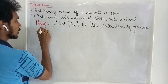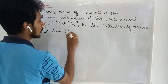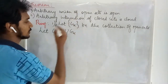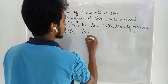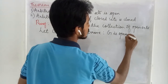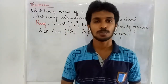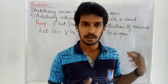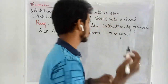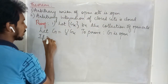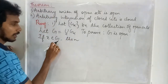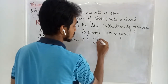Let us take G to denote the union of these sets. We have to prove that G is open. In order to say something is open, we have to prove all the elements of this set are interior points of the set. For that, let us take an arbitrary element X in G. This means X belongs to this union.